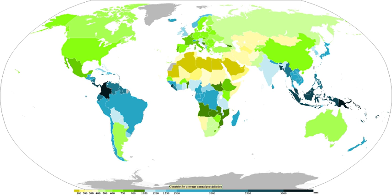Coalescence occurs when water droplets fuse to create larger water droplets, or when water droplets freeze onto an ice crystal, which is known as the Bergeron process. The fall rate of very small droplets is negligible, hence clouds do not fall out of the sky. Precipitation will only occur when these coalesce into larger drops. When air turbulence occurs, water droplets collide, producing larger droplets. As these larger water droplets descend, coalescence continues, so that drops become heavy enough to overcome air resistance and fall as rain.